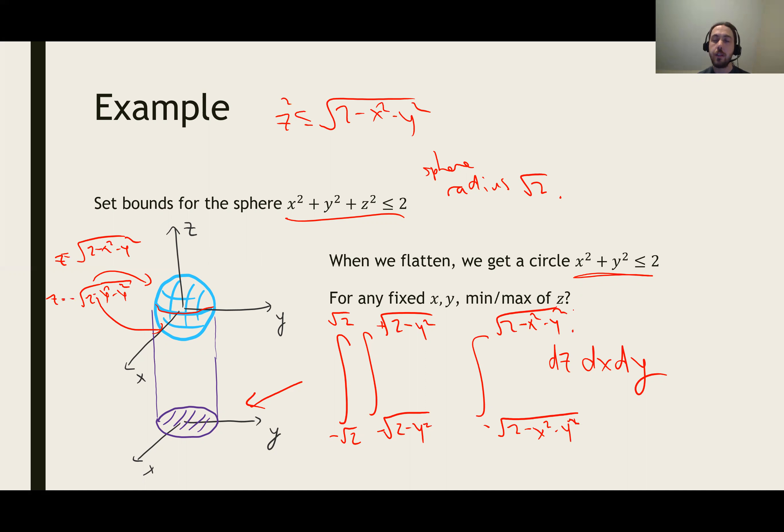So those would be the bounds for this triple integral. We have to understand what this flattened shape is. We do it on the outside, and then we figure out the top and bottom caps in terms of z.